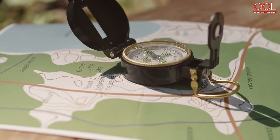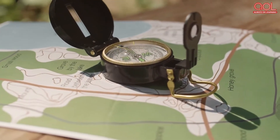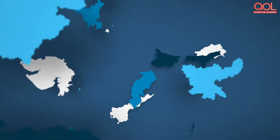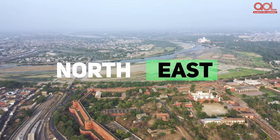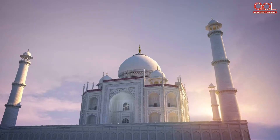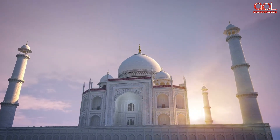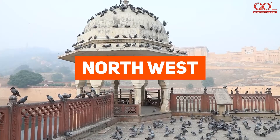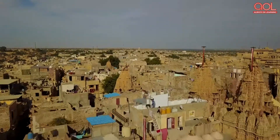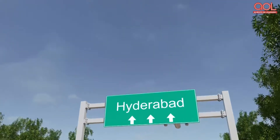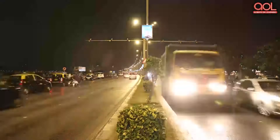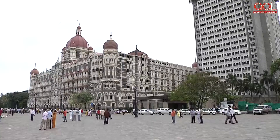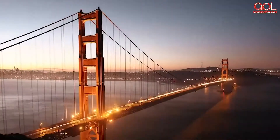There are four more directions which are positioned between the main cardinal points. Let's take a look at the map again to understand them. North East: The state of Uttar Pradesh is in the north-east direction. North West: The state of Rajasthan is in the north-west direction. South East: The state of Andhra Pradesh is in the south-east direction. South West: The state of Maharashtra is in the south-west direction.